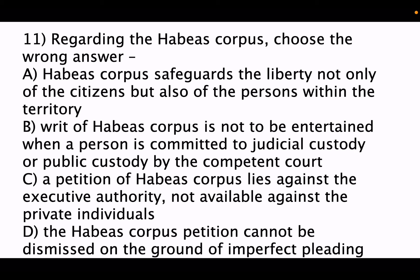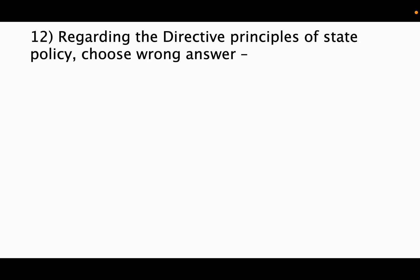The correct answer is option C — this is not included in habeas corpus. Option A is correct — it safeguards liberty of citizens and persons within the territory. Option B is also correct — the writ is not entertained when a person is committed to judicial custody by the competent magistrate. Option D is also included — the habeas corpus petition cannot be dismissed on the ground of imperfect pleading. So the wrong answer is option C.